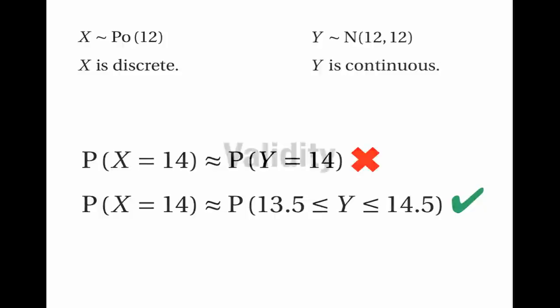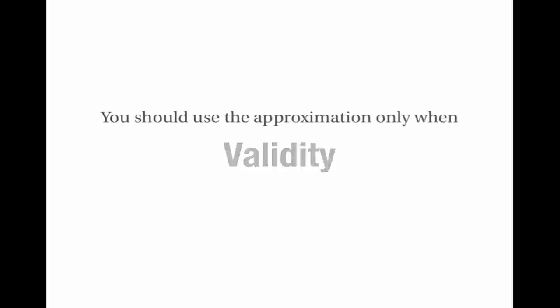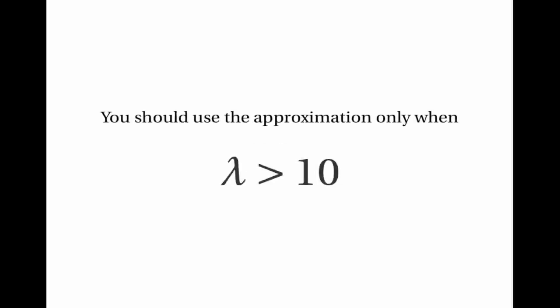The other thing to remember about the normal approximation to the Poisson distribution is when it's valid — when you're allowed to make the normal approximation. You should only use the approximation when lambda is greater than 10.